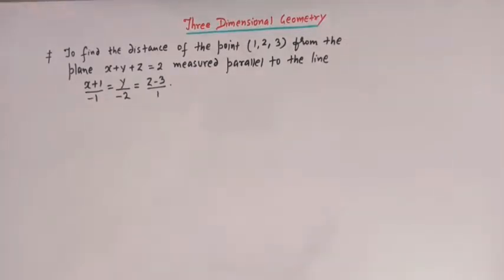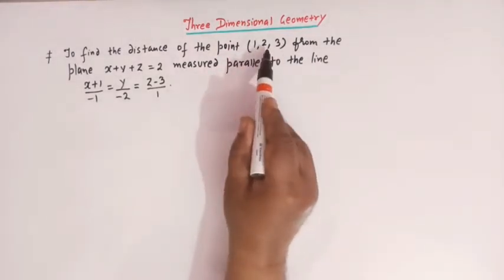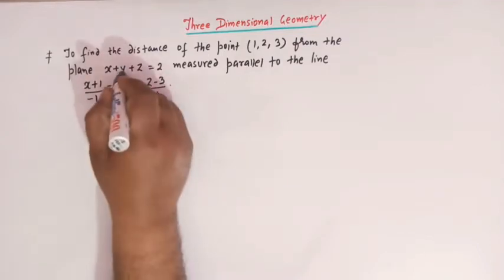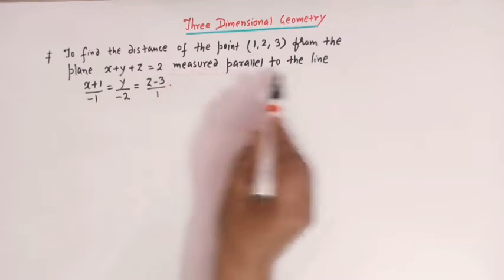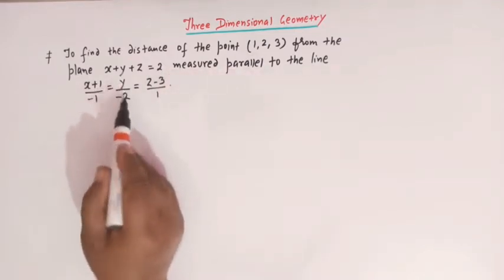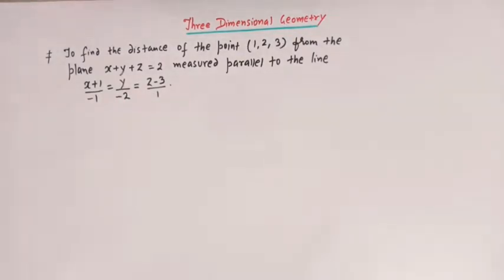Hello viewers. In today's class we are going to solve yet another important and conceptual problem from three-dimensional geometry. We have to find the distance of a point (1, 2, 3) from the plane x + y + z = 2, measured parallel to the line (x+1)/(-1) = y/(-2) = (z-3)/1.